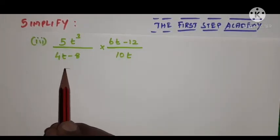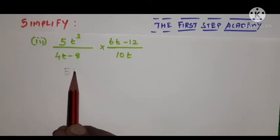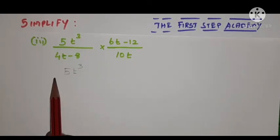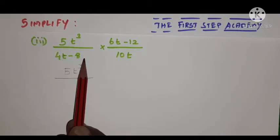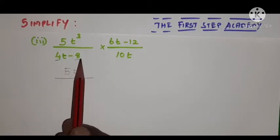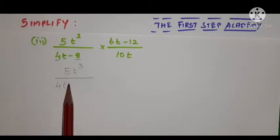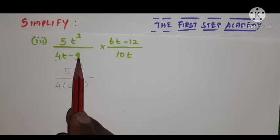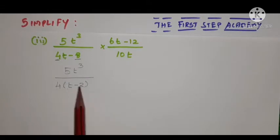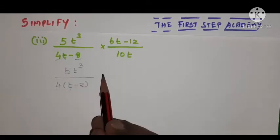Now I'm going to write the first term numerator as it is, 5t³, divided by—look at the denominator, 4t minus 8. In this, 4 is common in these two terms, so I'm factoring it out, leaving t minus 2. So the denominator becomes 4(t - 2).